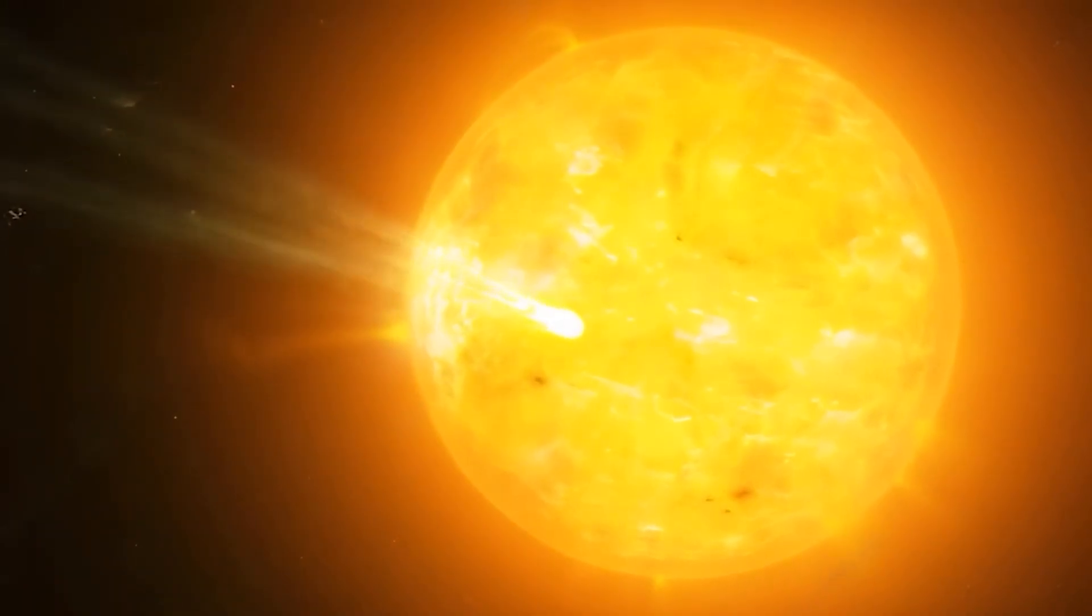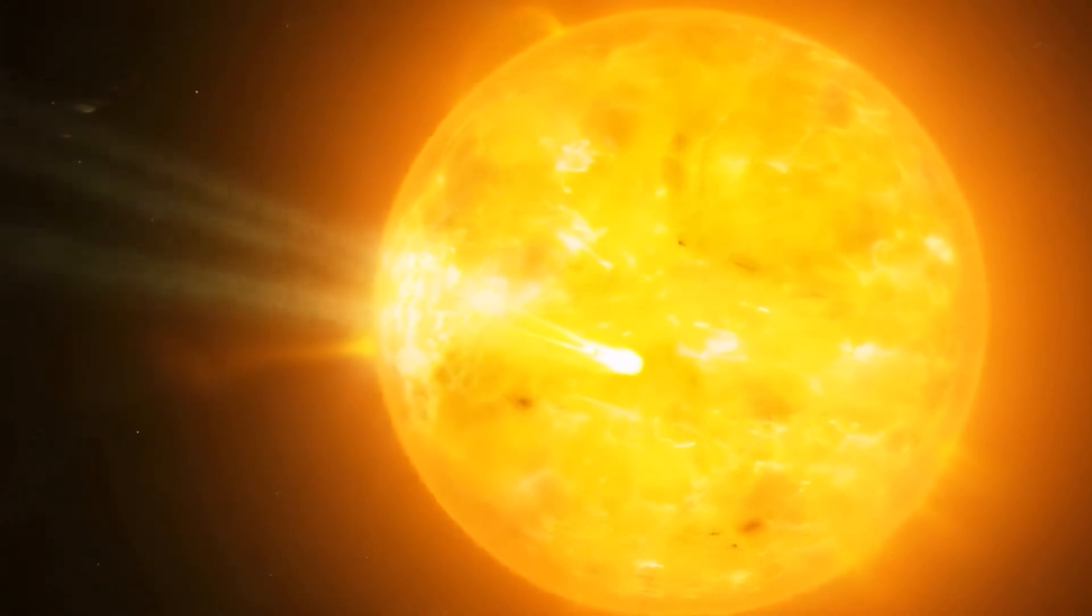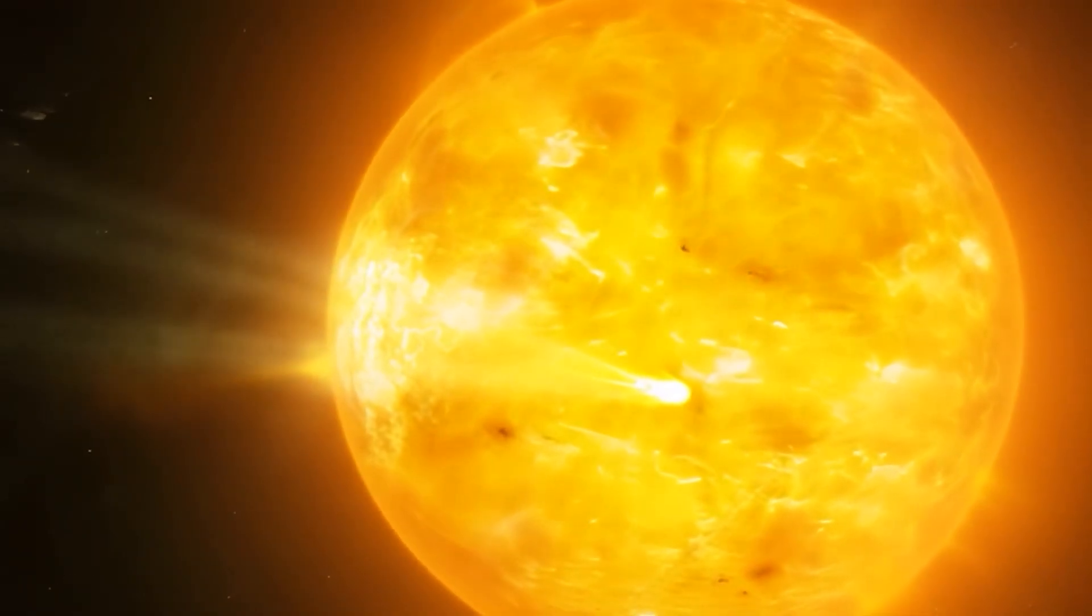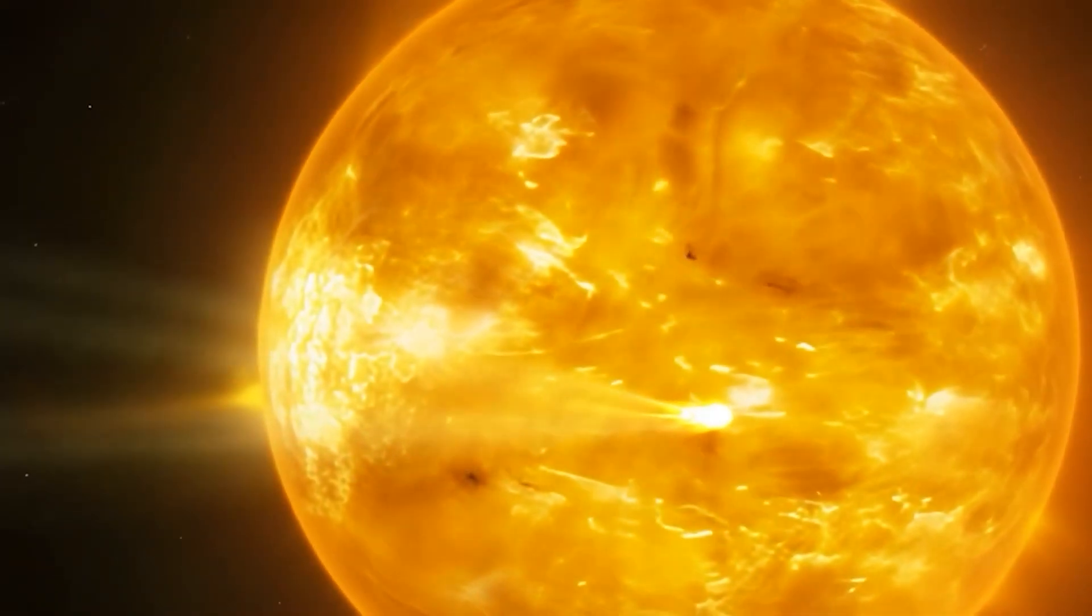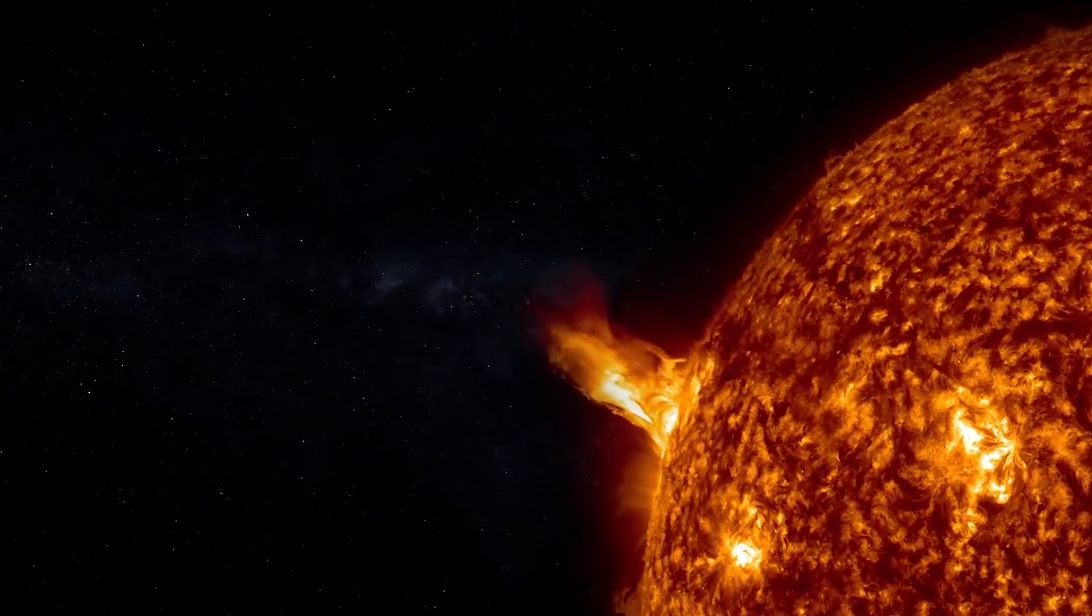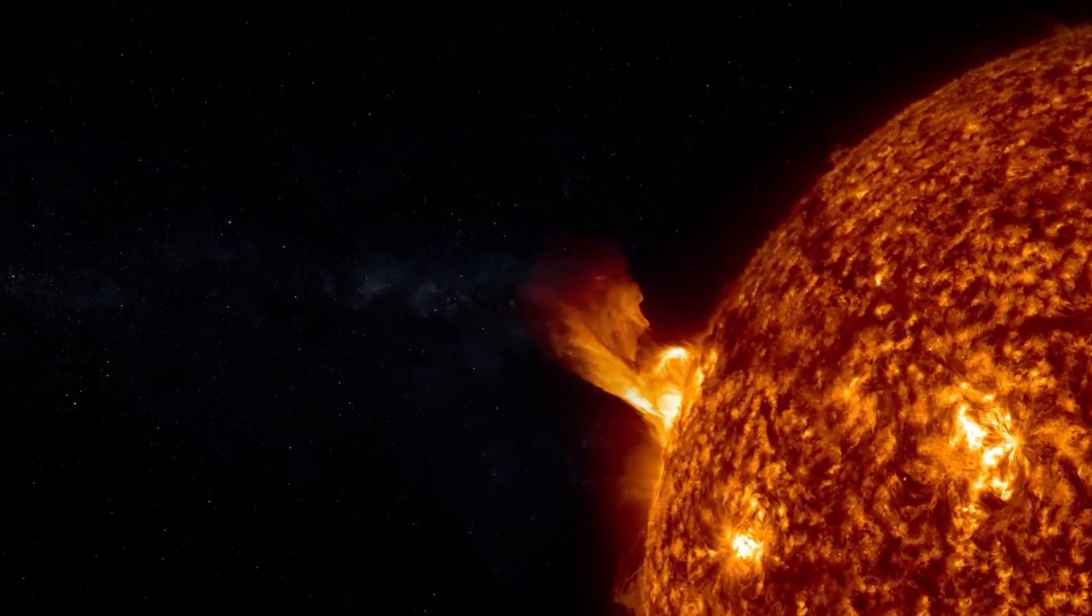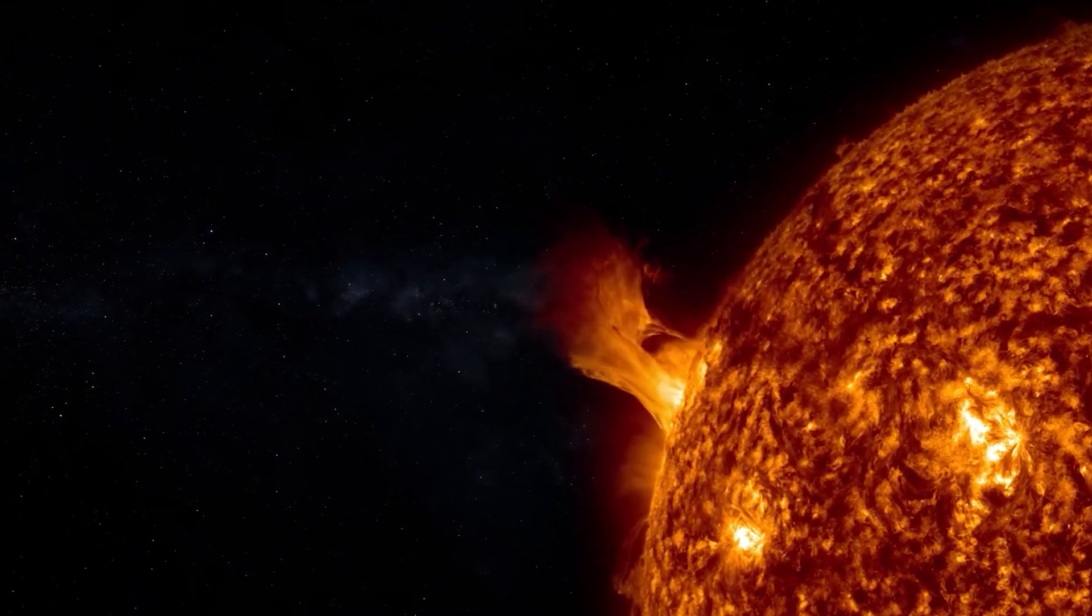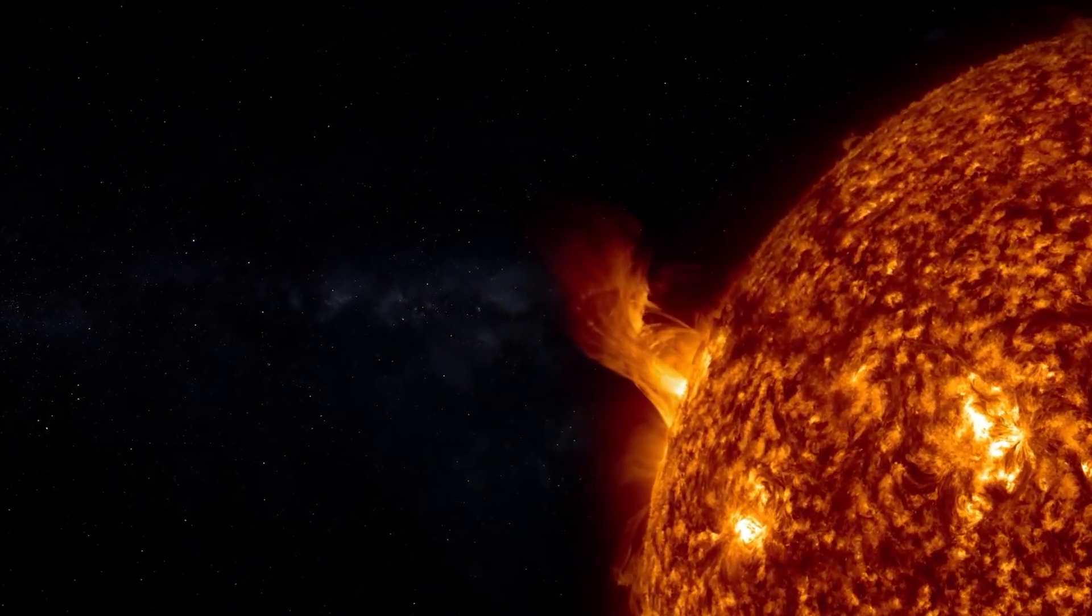Then, there's the interaction with solar events. As the comet approached its perihelion, our Sun continued its activity. One intriguing piece of information that surfaced around the same time was the prediction of a coronal mass ejection, or CME, from the Sun, potentially hitting 3I Atlas.